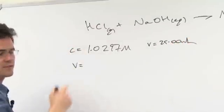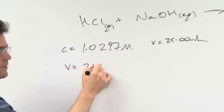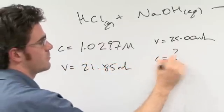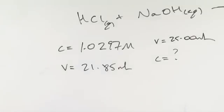The volume of the acid that we used was 21.85 mL. The concentration of this we didn't know. The first step, we've got both of these so we can work out the number of moles.